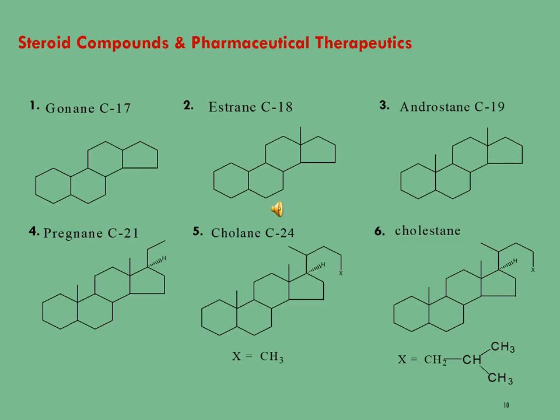Let's see some important steroidal compounds and their pharmaceutical applications. The first molecule has a total of 17 carbon atoms and is named gonane. This molecule has been isolated from the Solanaceae and Melanthaceae families of plants and is used as a contraceptive in vaginal rings and also has progestational activity. This molecule is soluble in organic solvents such as ethanol, acetonitrile, and methanol, which should be purged within an inert gas.